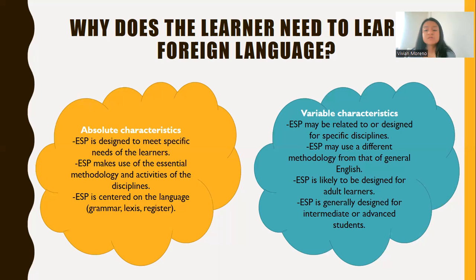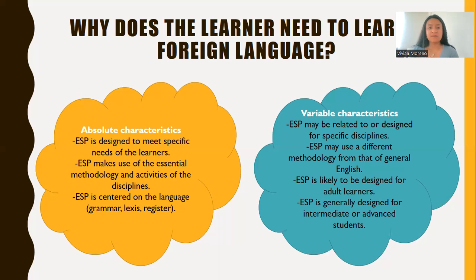Finally, in an ESP course students must have an intermediate or advanced level of English. Because as mentioned before, the students will learn specific topics and specific vocabulary — in fact they will learn English deeply. So they should have a general background of basic grammar structures and basic vocabulary in order to understand the topics that are deeper. So this is all I can mention about the characteristics and the role of teachers and students in an ESP course. Thank you for your attention.